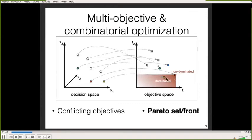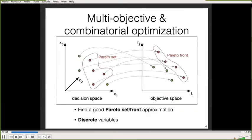The yellow solution is called a dominated solution, and if a solution is never dominated by another solution, it is called non-dominated. Instead of giving one unique solution, the goal is to give a set of non-dominated solutions. This set is called the Pareto set in the decision space and the Pareto front in the objective space.